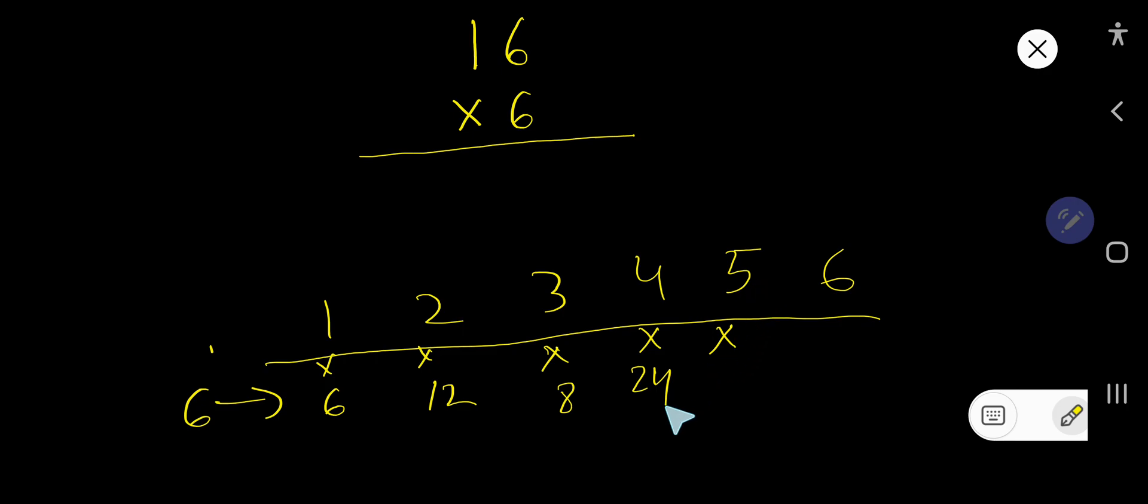6 times 5 equal to what? Just add 6 with this 24, so that is 10, 0, then 1. 2 plus 1, 3, 30, right? So 6 times 5, 30. So 6 times 6 equal to what? 30 plus 6, 36.